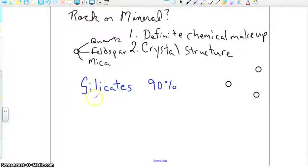And silicates are not the only groupings of minerals. You also have carbonates. You also have oxides. But the most common of these is going to be silicates.